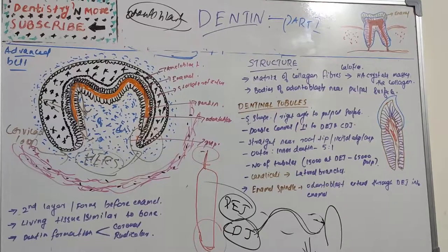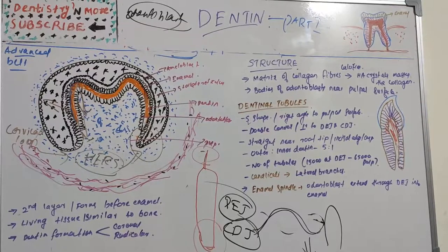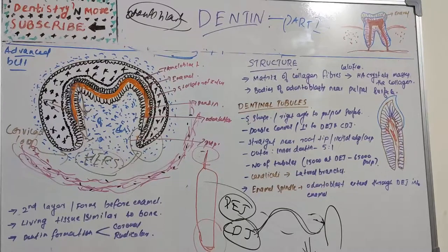In the next session, we will be learning about various types of dentine, such as peritubular dentine, intertubular dentine, predentine, odontoblastic processes, primary dentine, secondary dentine, and tertiary dentine. Thank you.